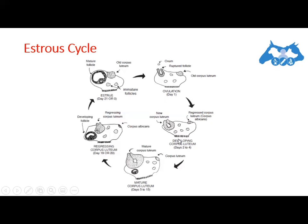During days one to four, the cells that formerly lined the follicle change and become the luteal cells of the corpus luteum. This change in cell form is caused primarily by the action of LH. Up to this stage the corpus luteum grows rapidly in both size and function. Numerous follicles may be seen on the ovary, but by day five they have begun to regress.